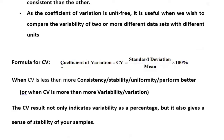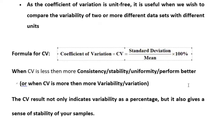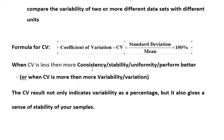The formula is very simple. The coefficient of variation, denoted CV, equals standard deviation divided by mean, multiplied by 100, and you get the result as a percentage. When CV is less, the data is more consistent, more stable, and more uniform. When CV is more, there is more variation and more variability.